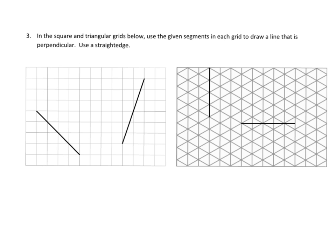Here we're just supposed to complete the segments so that we have some perpendicular lines. You could do that, or you can do this — there's a whole bunch of variety of answers. They don't have to be perfect; just let the kids draw. There's one, and let's be creative here. And there we go.